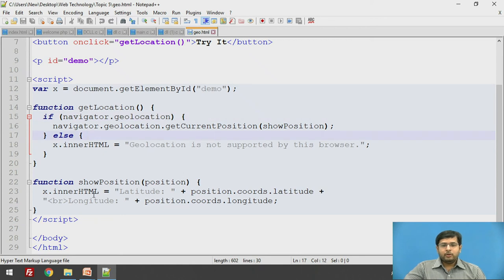Using show position which we have passed as a parameter to get current position, x.innerHTML that is used to display the latitude by the help of position.coords.latitude which we have seen as one of the properties of geolocation. That is coords is the coordinates dot latitude which will return the latitude of the user's location. And similarly, we are taking the longitude using position.coords.longitude.